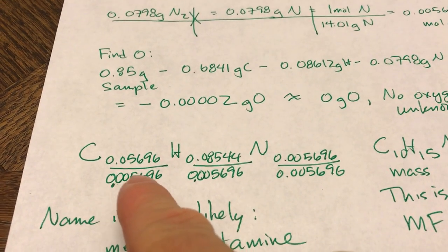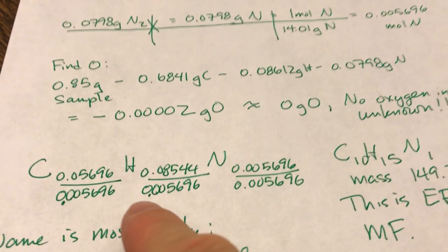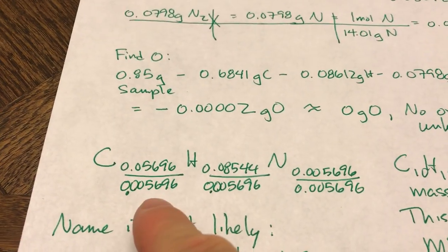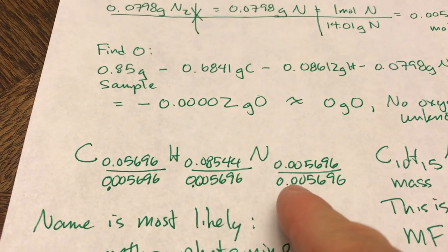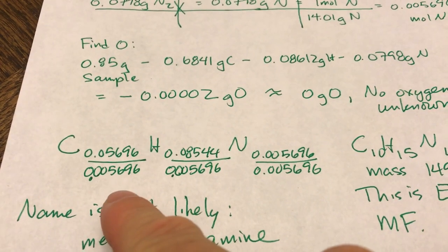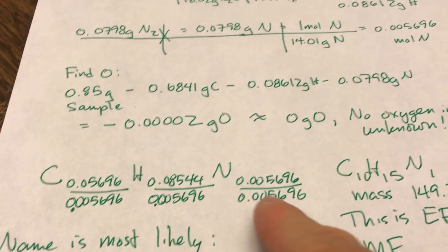Then I collected all my moles from the work up here. I divided through by my smallest number. I was thrown off by the fact that two of the numbers were the same, except nitrogen had an additional zero. But I caught that and I fixed it. And so I ended up dividing through by the smaller number.